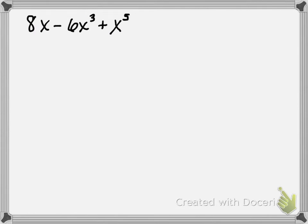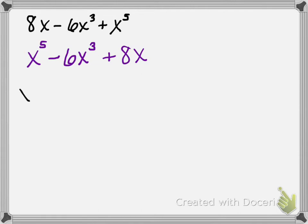In the third example, we have 8x minus 6x cubed plus x to the fifth. The first thing I would do is put these in order from highest degree to lowest degree. The highest degree would be x to the fifth, the next would be x cubed, and then 8x at the end as a first degree term. On this one, is there anything I can factor out of all three terms? You can factor an x, leaving me with x to the fourth minus 6x squared plus 8.